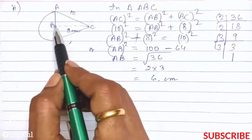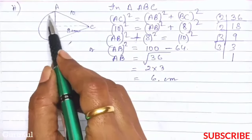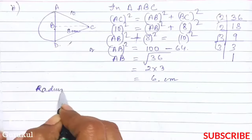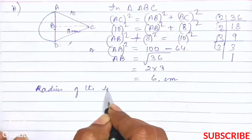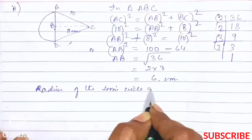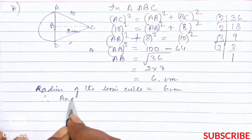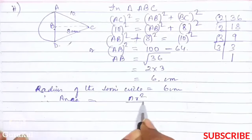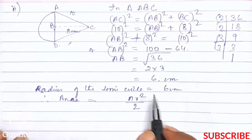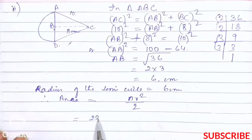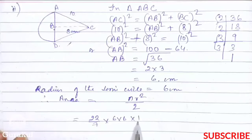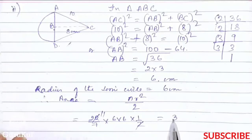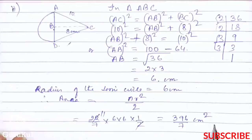AB is the radius of the semicircle. So radius of the semicircle is 6 centimeter. Therefore area is equal to pi r square by 2, just because it is a semicircle. Solving: 22 by 7 into 6 into 6 into half, giving us 396 by 7 centimeter square. This is the area of the semicircle.